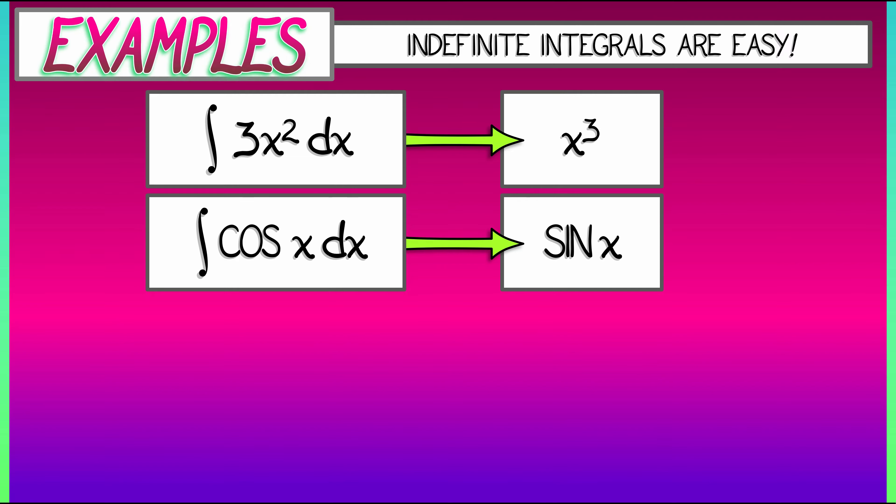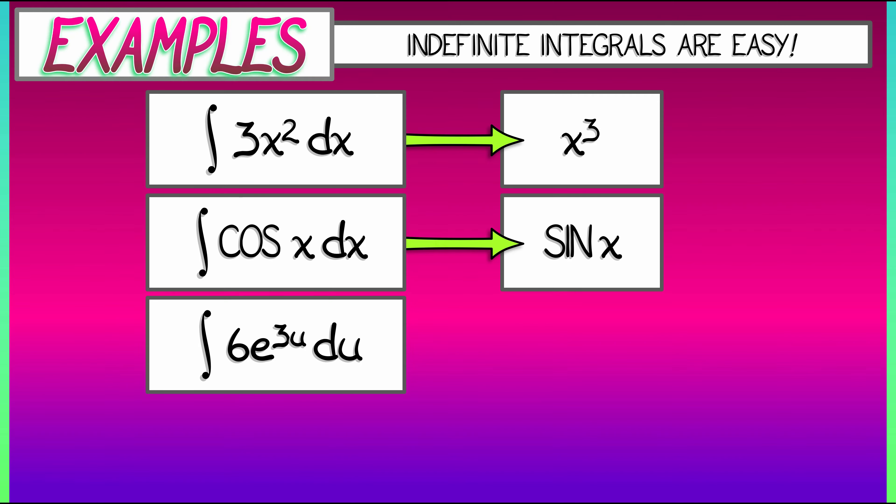We don't have to use the symbol x. We can use any variable we want. But what happens when we integrate 6e to the 3u? Take that function, integrate it with respect to u. What do we get? Let's think. The derivative of e to the 3u is, by the chain rule, 3e to the 3u. But we want 6e to the 3u. So let's put a 2 out in front. 2e to the 3u.